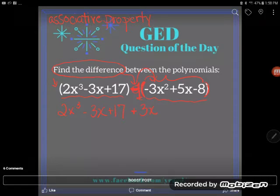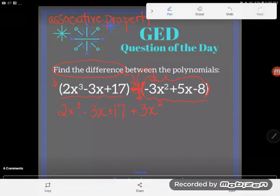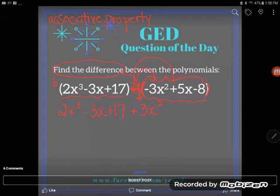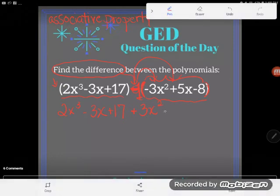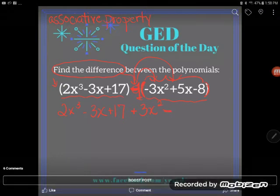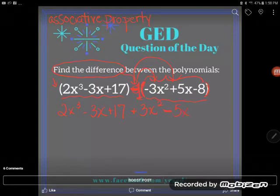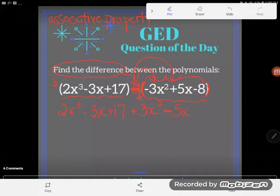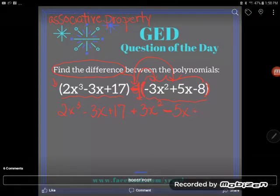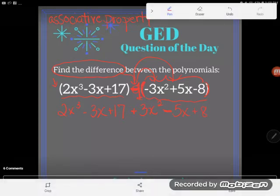If I subtract negative 3x, subtracting a negative turns into a positive, and so I'm going to see a sign change. My negative 3x squared turns into a positive 3x squared. If I subtract positive 5x, again that's going to change that from a positive 5x into a negative 5x, and I see that sign change. And then same thing here - if I subtract a negative 8, it's going to end up changing its sign to a positive 8.